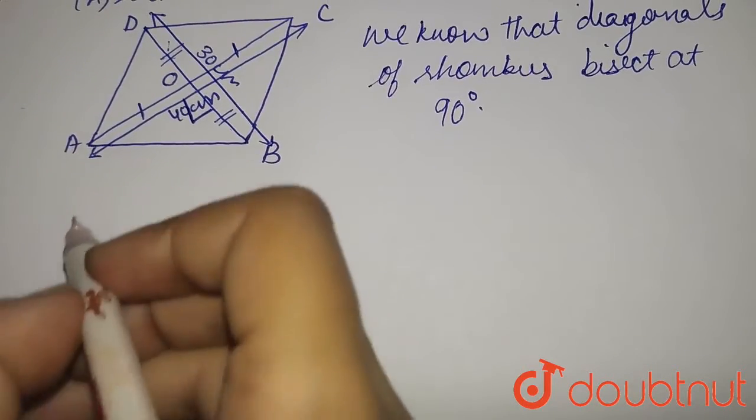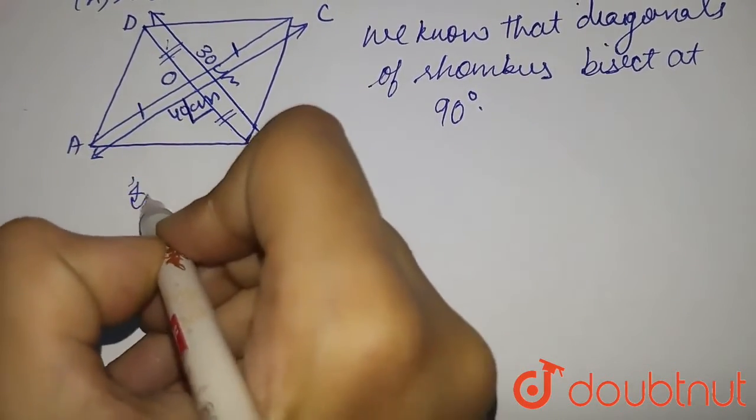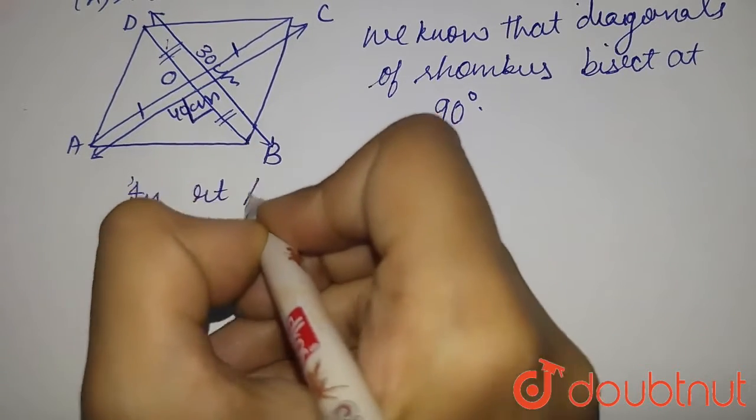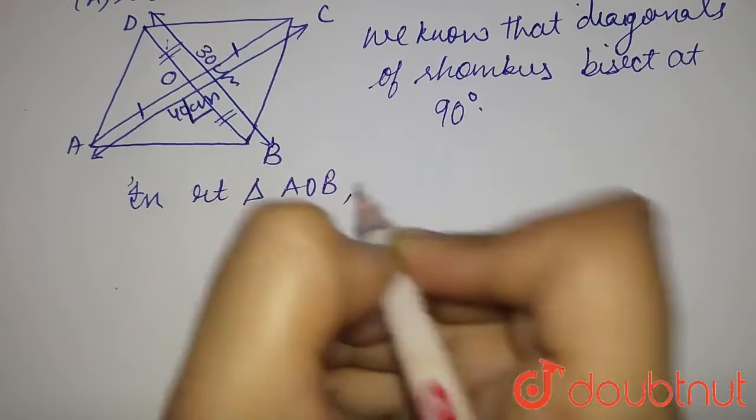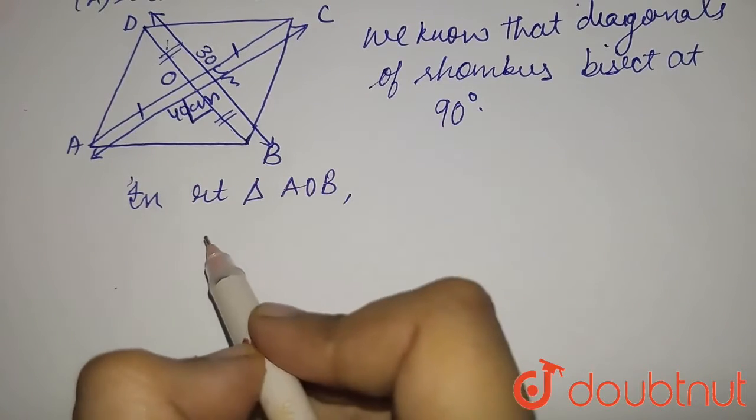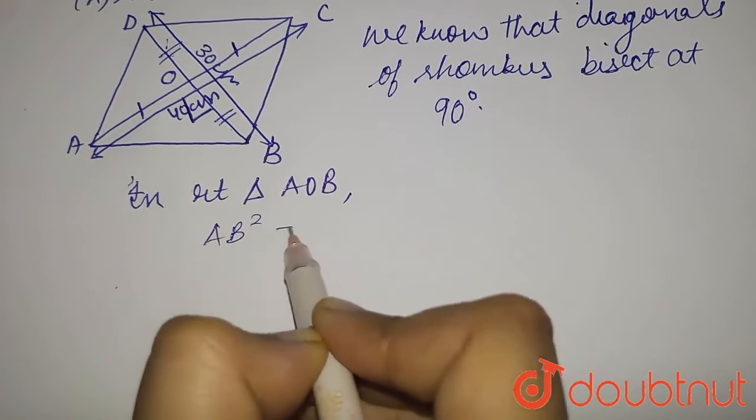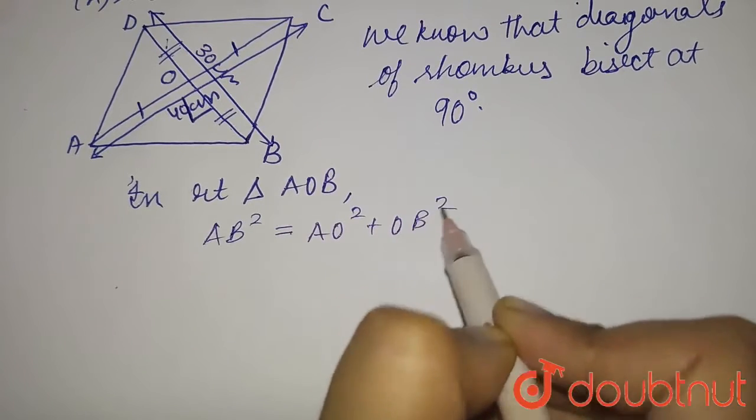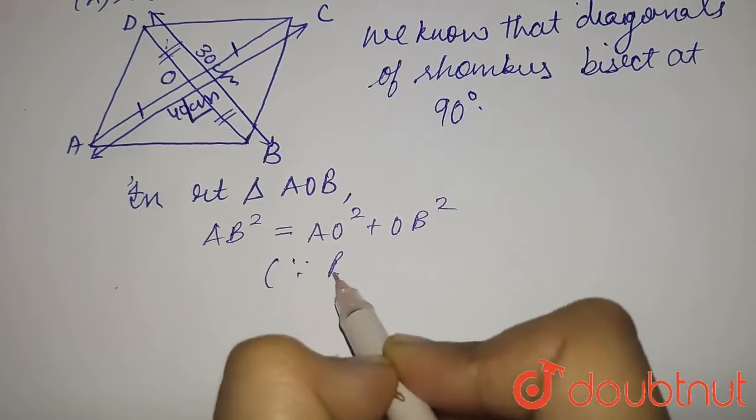So now, in right triangle AOB, AB² must be equal to AO² plus OB². How? Using Pythagoras theorem.